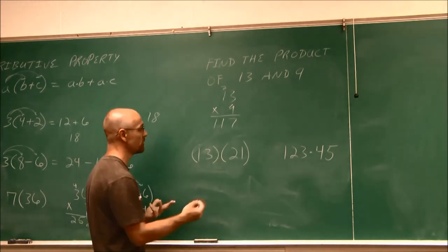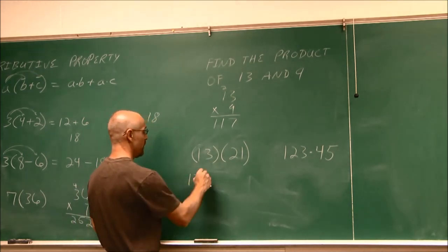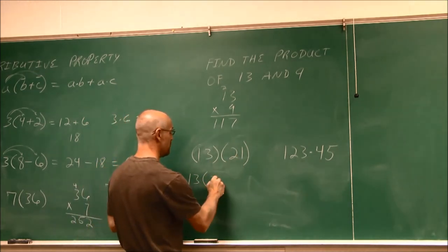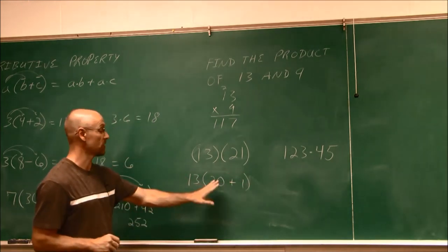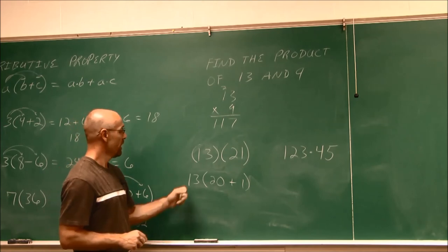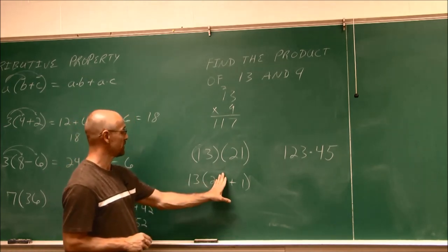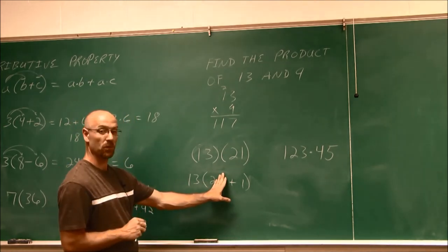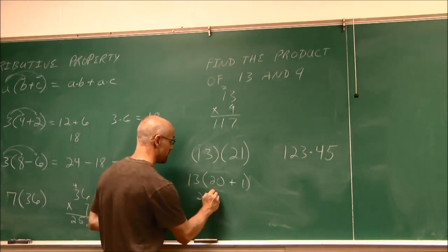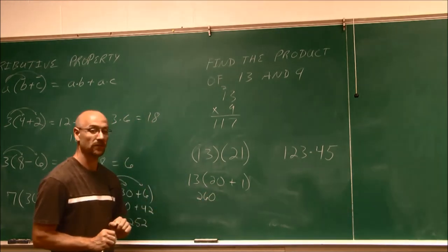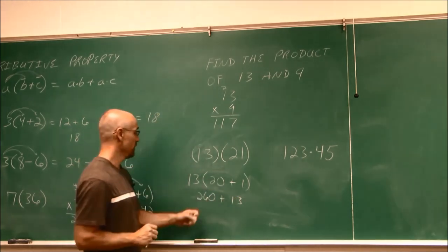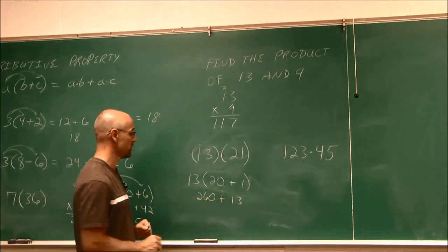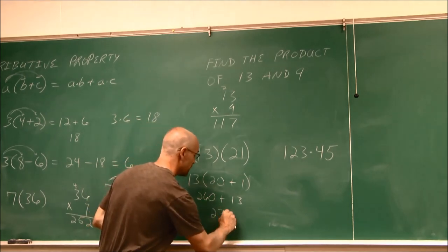Now here, I'm going to use the distributive property for this one. 13 times 21, which is 20 and 1. 21, that sum still holds true. So 13 times 20. I look at that 2 and say, well, 2 times 13 is 26. In the tens place, a 26 in the tens place, I just add a 0. And 13 times 1 is 13. 260 plus 13 more is 273.